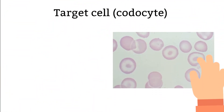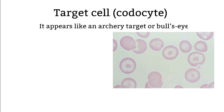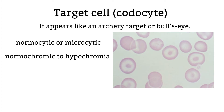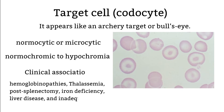Target cells. Target cell is probably the easiest to recognize so far — it looks like a target or like a bull's eye. Target cells are usually normocytic or microcytic and the hemoglobin ranges from normal to hypochromia. Target cells are caused by membrane defects and excess membrane cholesterols and phospholipids, and decreased hemoglobin.